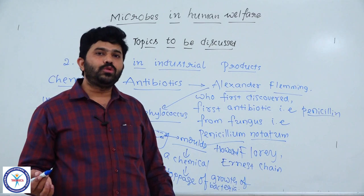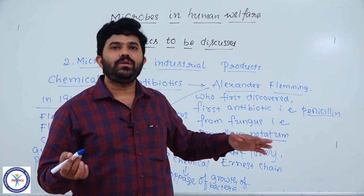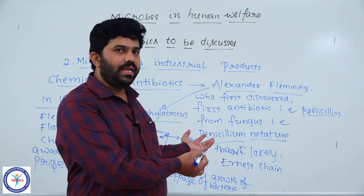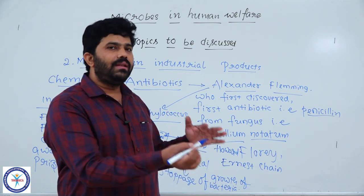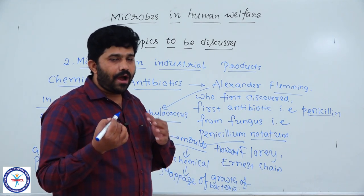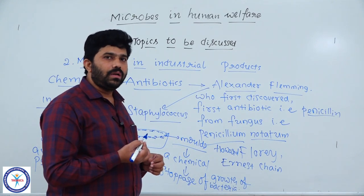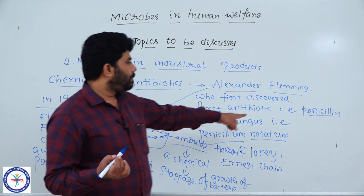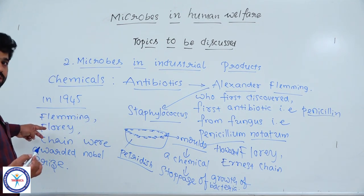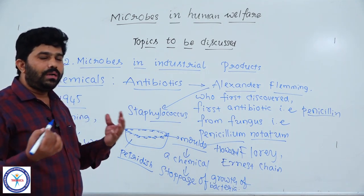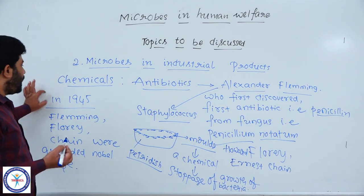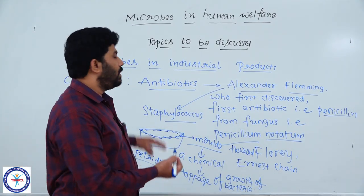For that extraordinary work, first done by Fleming and later brought to the entire world by Florey and Ernest Chain, they were awarded the Nobel Prize in the year 1945. These antibiotics are very important for so many dreadful diseases. These antibiotics are produced at large scale by industries using microorganisms, just as penicillin is extracted from the fungal member Penicillium notatum.